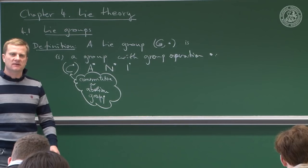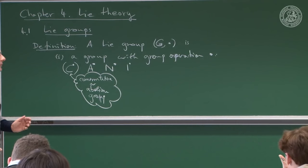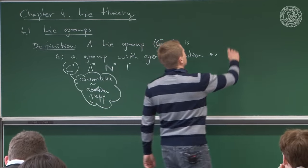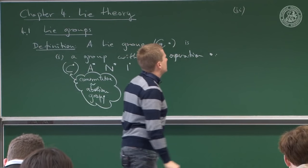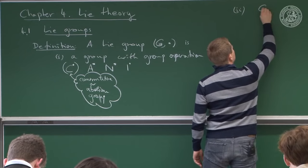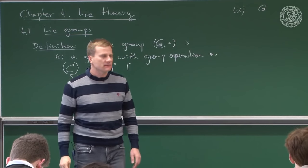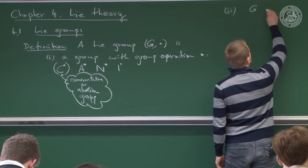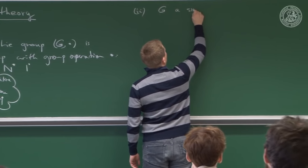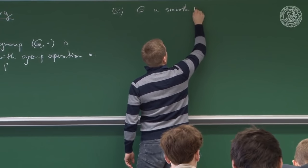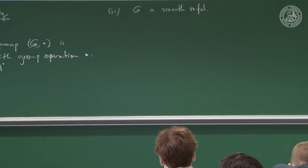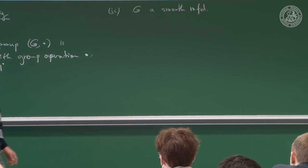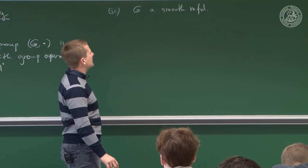So nothing spectacular about this — a Lie group is a group, but it's more than a group. In addition, the underlying set G is much more than a set: G is actually a smooth manifold. That means there is a topology given on G and also a smooth structure — a maximal smooth atlas. G is a smooth manifold.